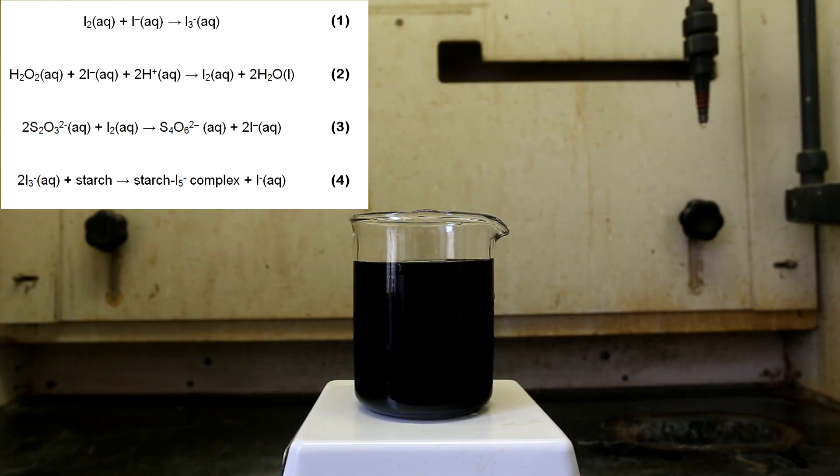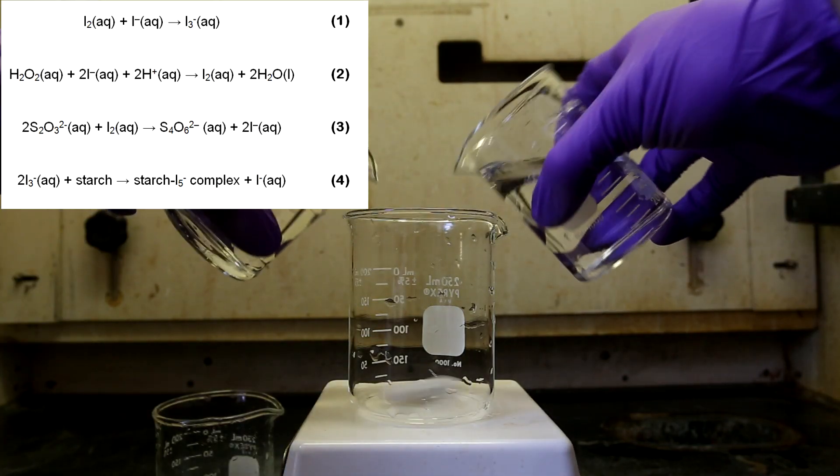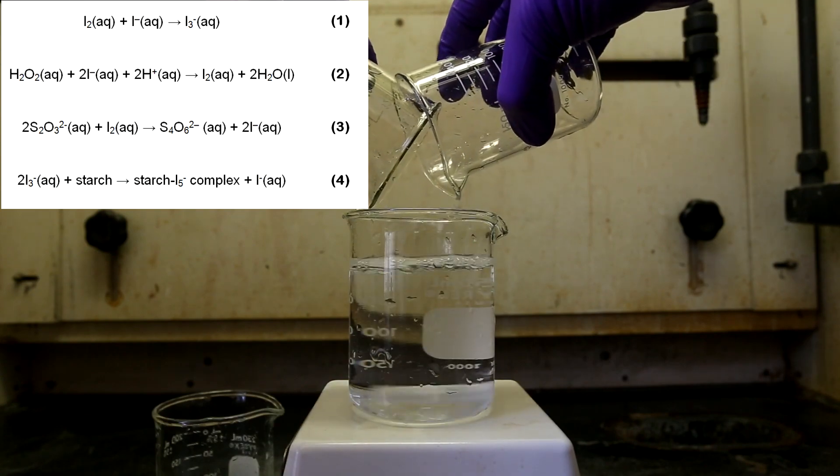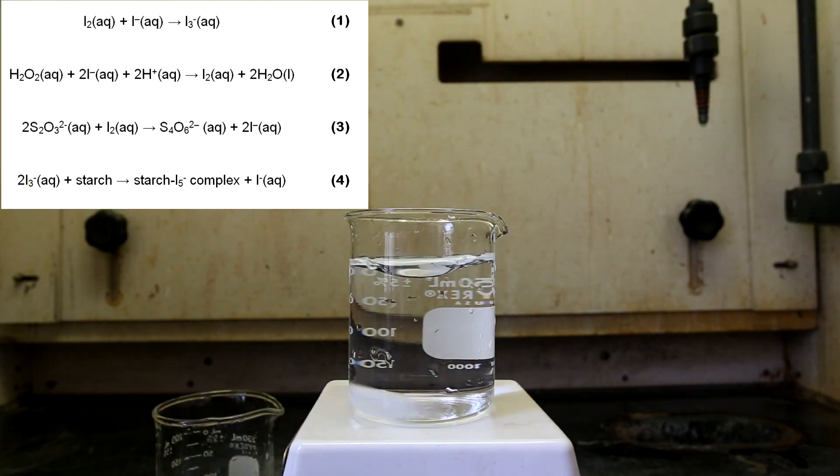This back-and-forth conversion between iodine and iodide occurs until the thiosulfate ions are exhausted. At this point, iodine can't be reduced back to iodide, and it will start to build up. Now, referring to the first equation, iodine will react with iodide to form triiodide.